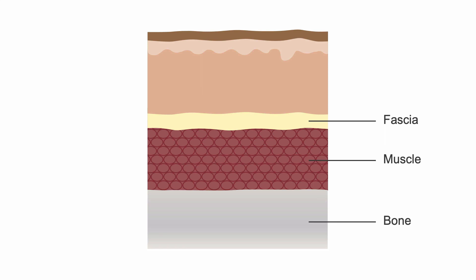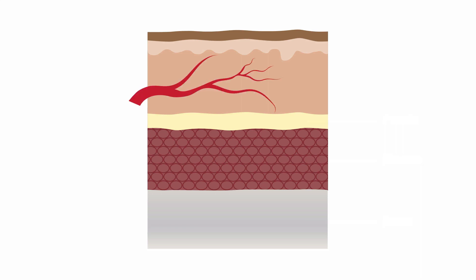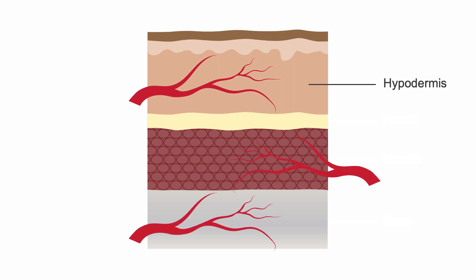There are a couple of important things to note. The major blood supply to the skin is located in an area called the hypodermis or subcutaneous tissue. Muscle and bone, however, utilize a separate blood supply.